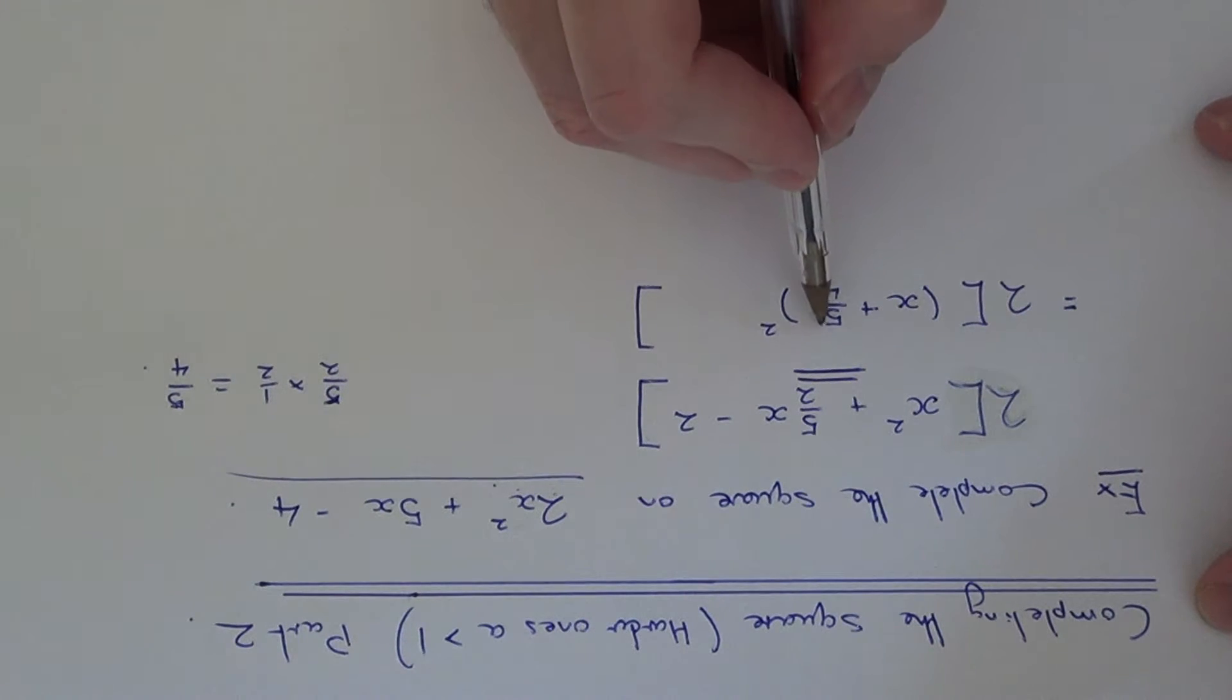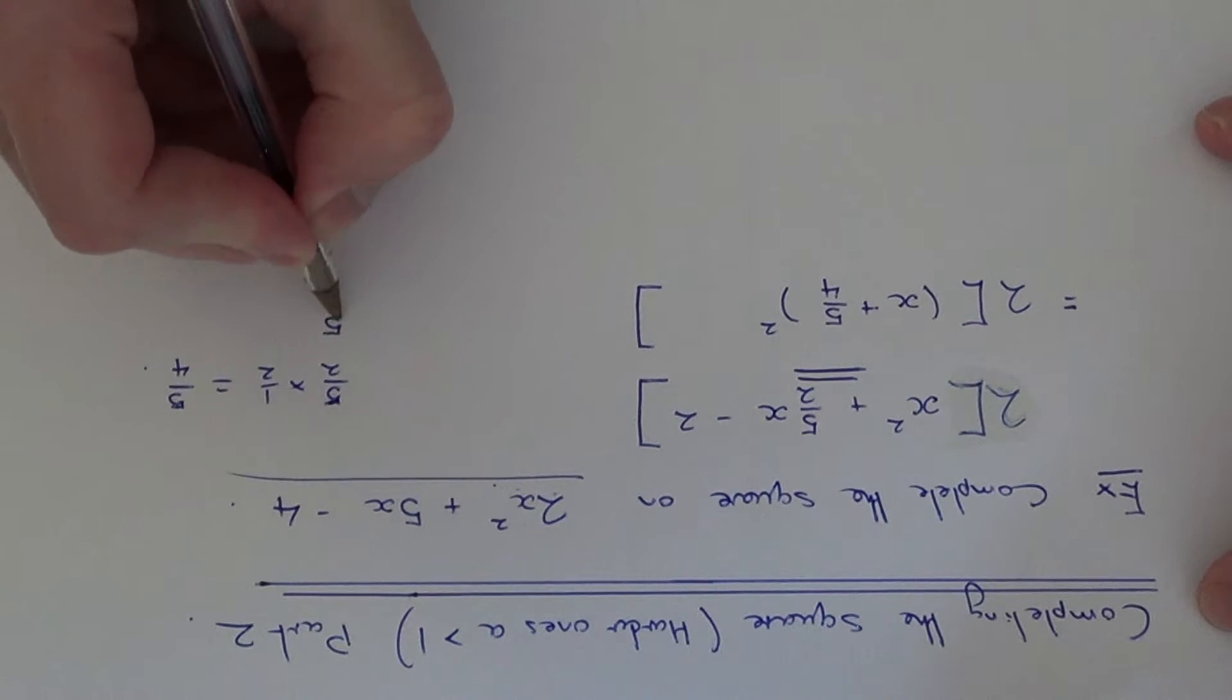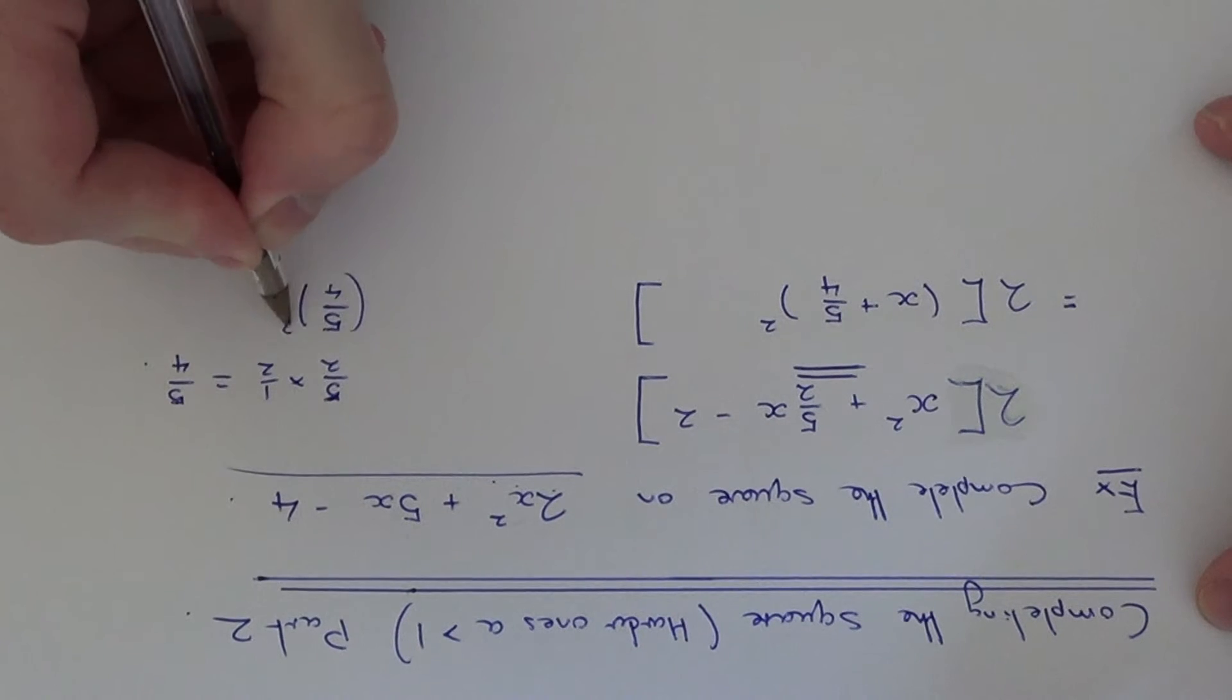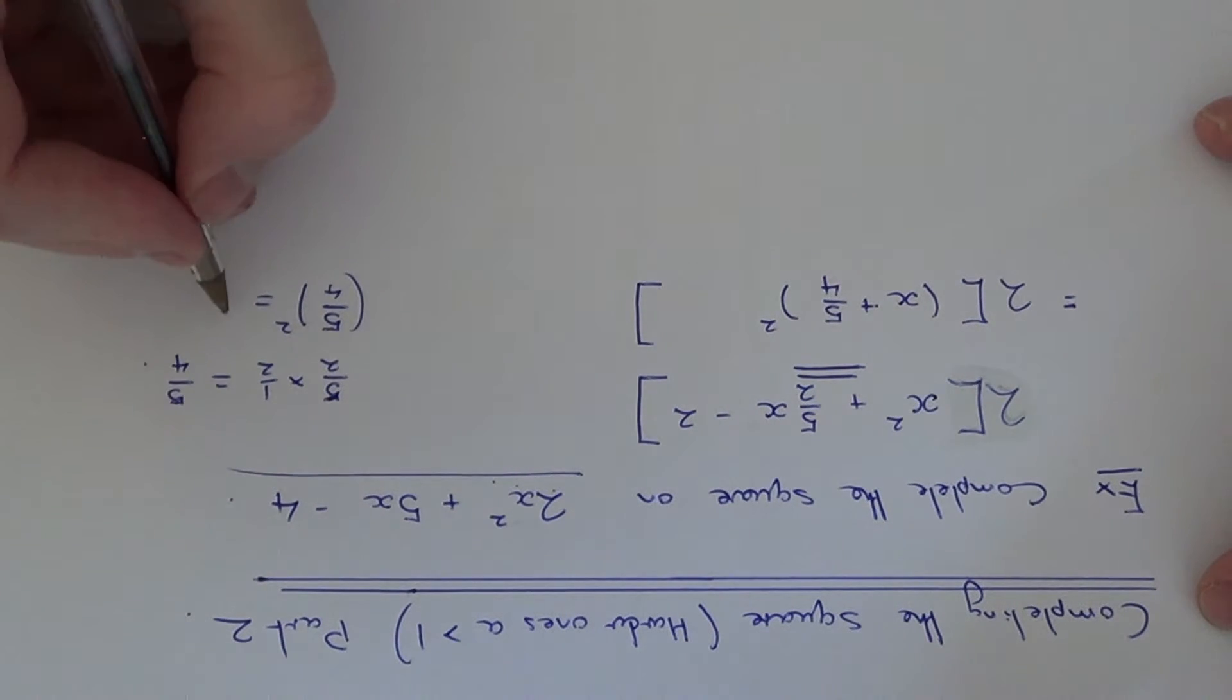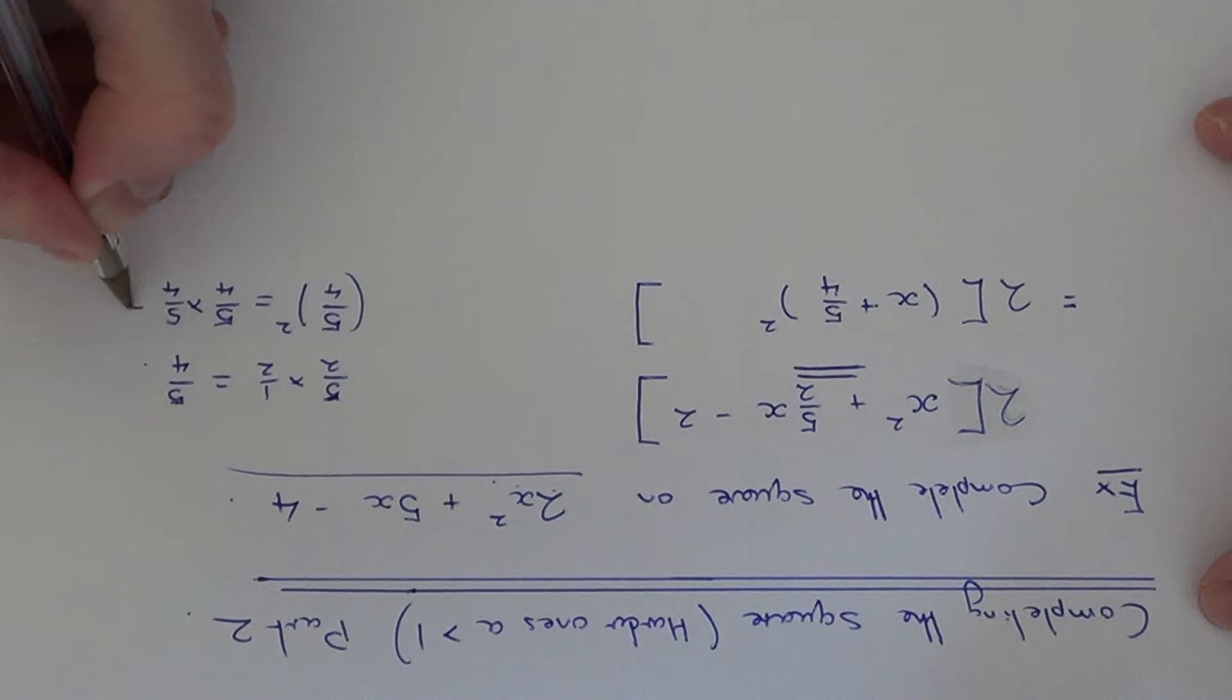So we then square this p value here. So we need to work out 5 over 4 squared. We just need to multiply fractions again, which gives us 25 over 16.